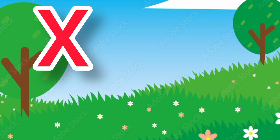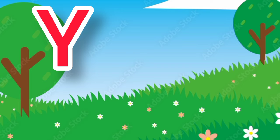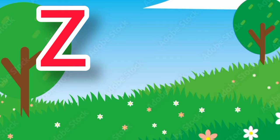Y. Y for yo-yo, yo-yo means yo-yo. Z. Z for zebra, zebra means chithidhar ghoda.